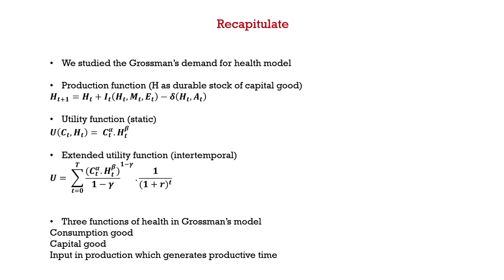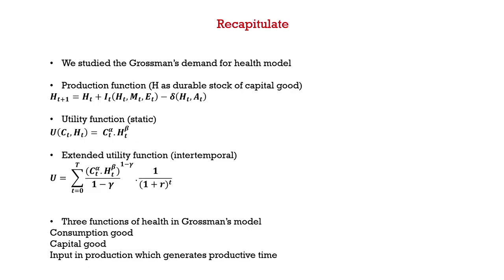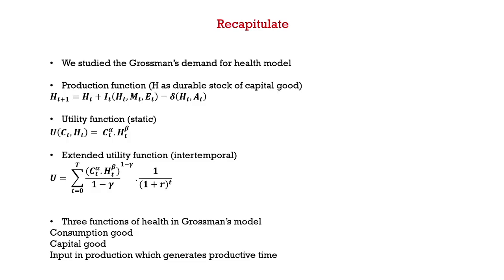As a part of this model, the highlight was on three important functions. One was the production function, where the discussion was about Grossman allotting health as a durable stock of capital good. We discussed how health in time period t+1 is dependent upon the stock of health in time t plus the investments made on it with respect to the expenditures made on the stock of health minus the depreciation.